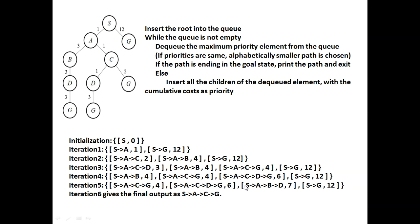Looking at this diagram, we have the root node S and we are trying to find the goal node G. The algorithm first inserts the root into the queue. Initially, S is the root and its path cost is zero. We loop while the queue is not empty — since the queue has S, it enters the loop and dequeues the maximum priority element, which is S.